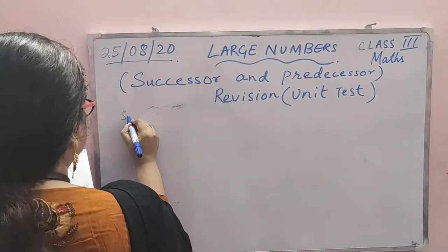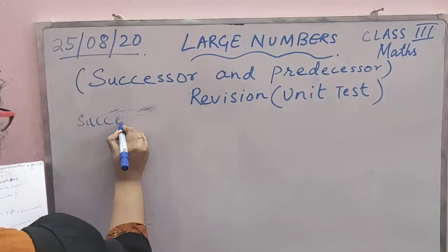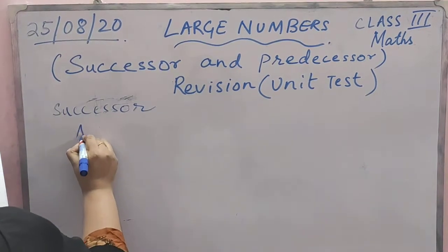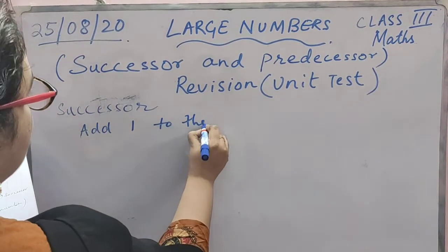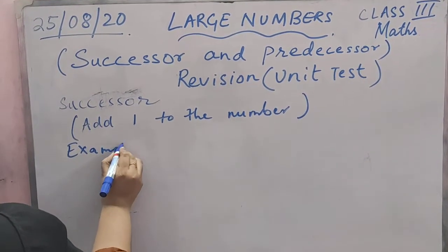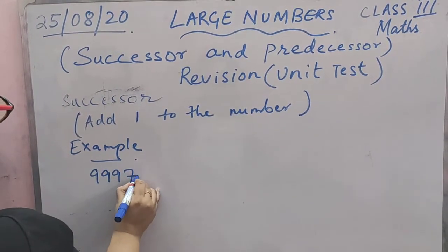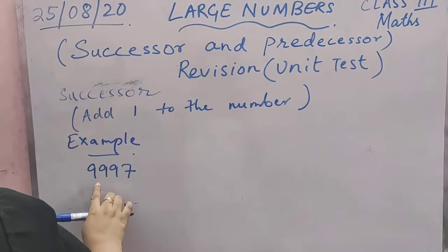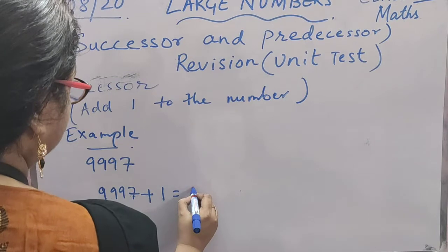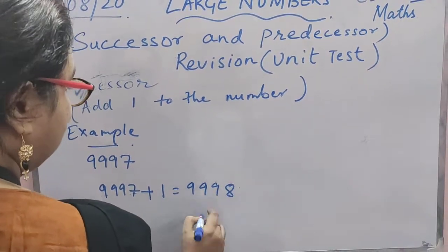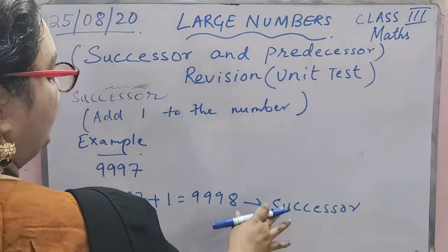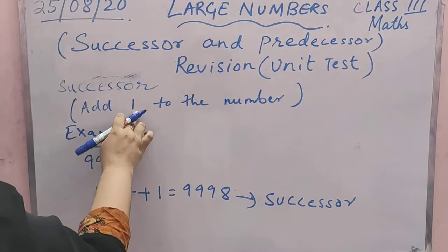First we are going to see successor. In order to find a successor, you just need to add 1 to the number. Let's see with an example. This is your question — you have to find the successor of this number. So what you have to do? You have to just add 1 to this number. You will get the successor, so 9998 is your successor. Always remember, whenever you want to find the successor of any numeral, you need to just add 1 to that number.